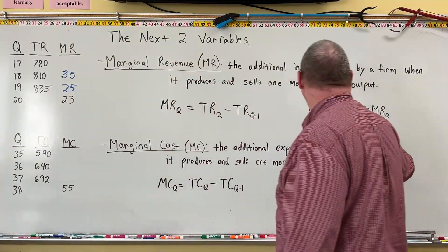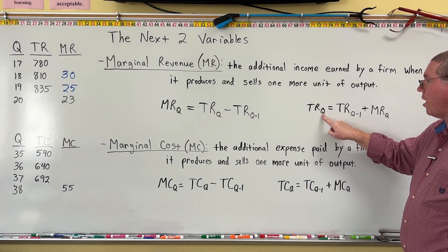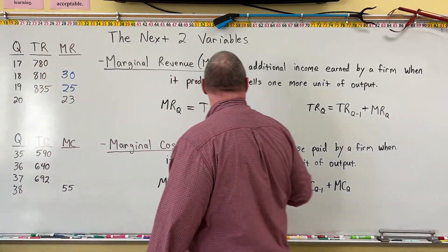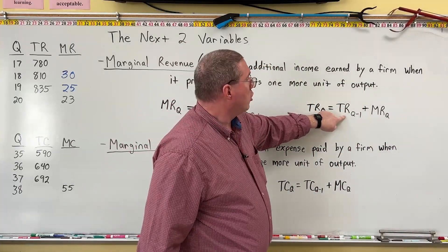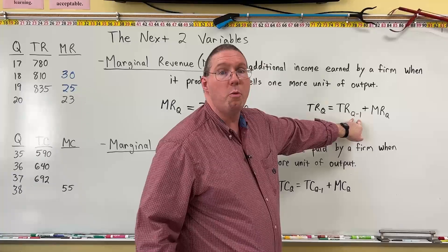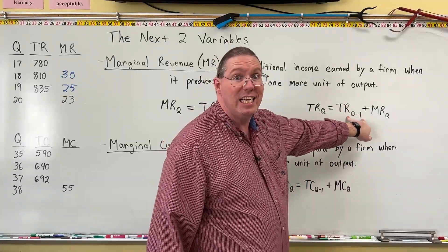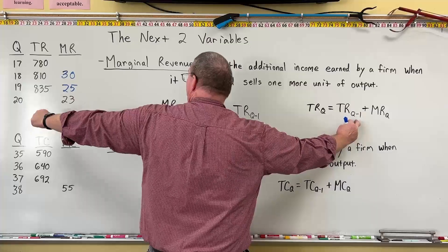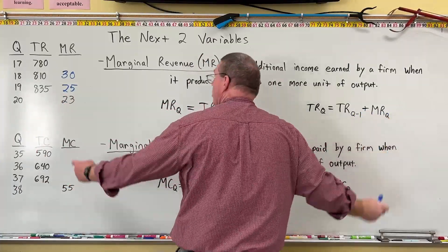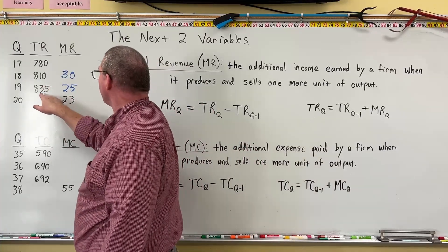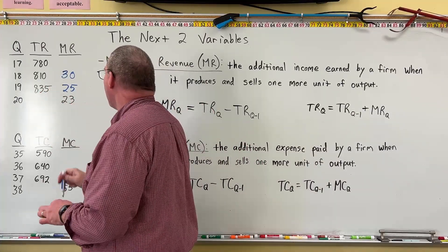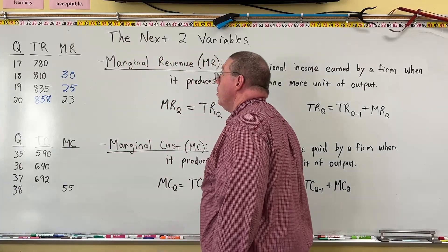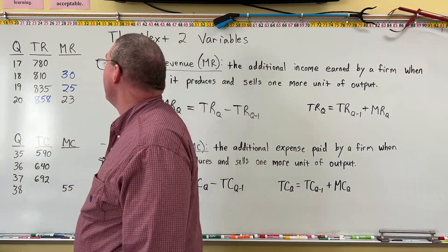So we can use the formula: if Q is 20 and we want to know total revenue for 20, we take total revenue for Q minus 1, which is 19 — that's 835 — plus the marginal revenue of the 20th unit, which is 23. 835 plus 23 is 858. So the total revenue for producing and selling 20 units is 858.